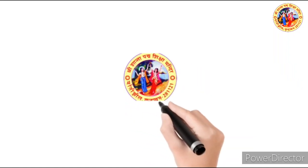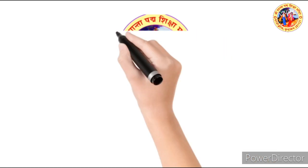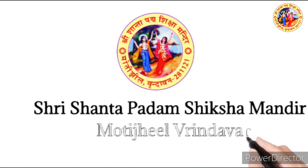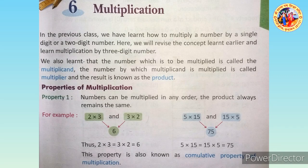In the previous class we learned how to multiply a number by a single digit or two digit number. Here we will revise the concept learned earlier and learn multiplication by a three digit number. The number which is to be multiplied is called the multiplicand, and the number by which the multiplicand is multiplied is called the multiplier.